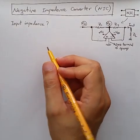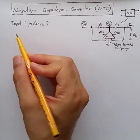How does the negative impedance converter, or NIC, work, and what is the input impedance?